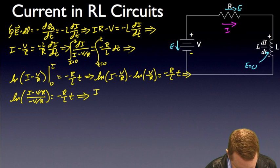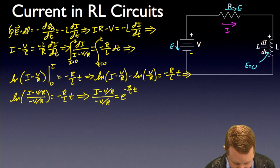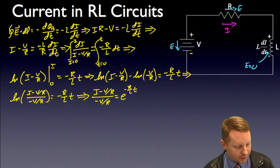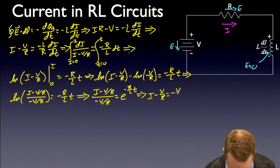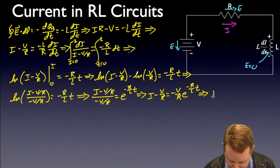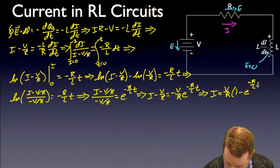So on the left-hand side, (I minus V/R) divided by (negative V/R) equals e to the minus R/L times t. If I multiply both sides by negative V/R, this implies that I minus V/R equals negative V/R times e to the minus R/L times t. And if I add V/R to both sides, this implies that I equals V/R times (1 minus e to the minus R/L times t).